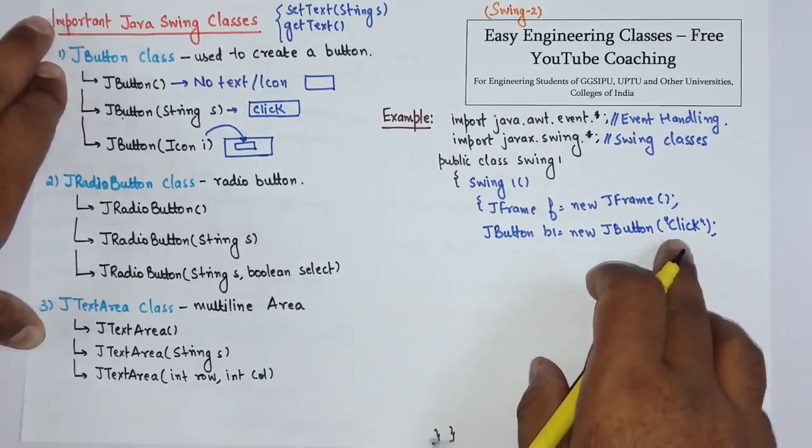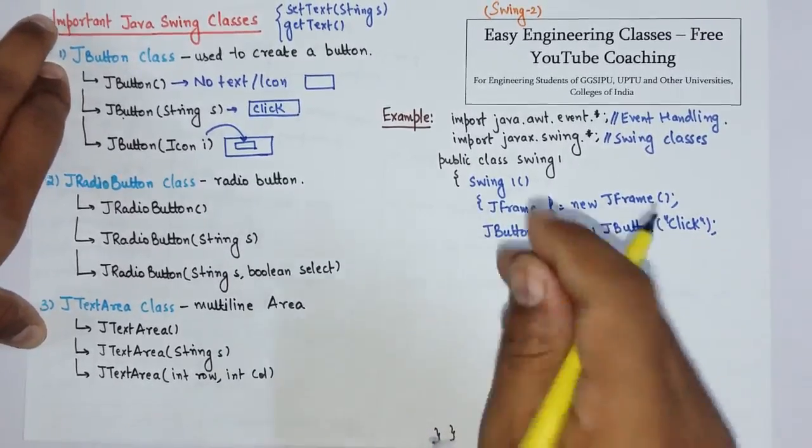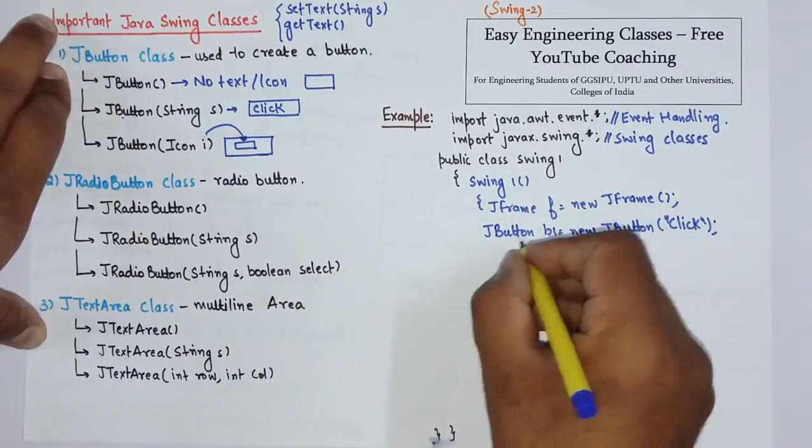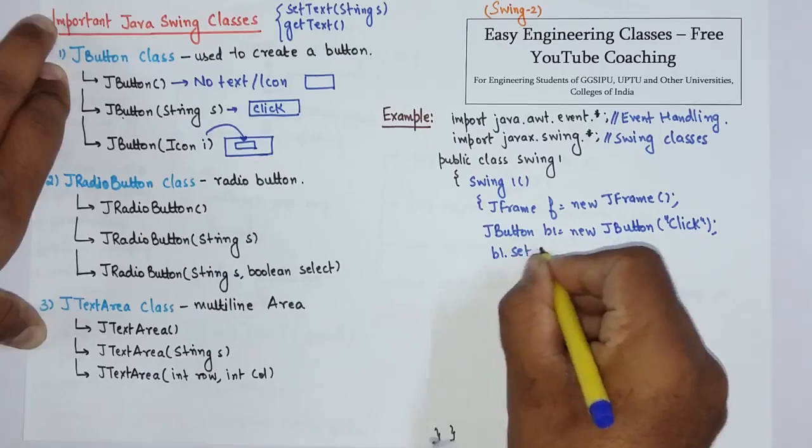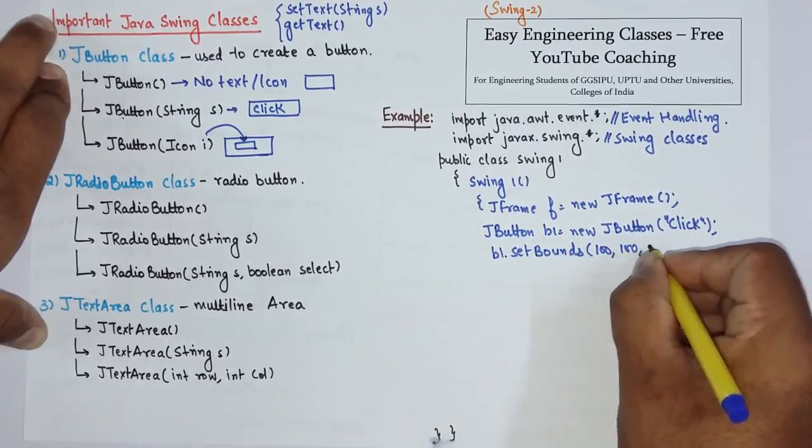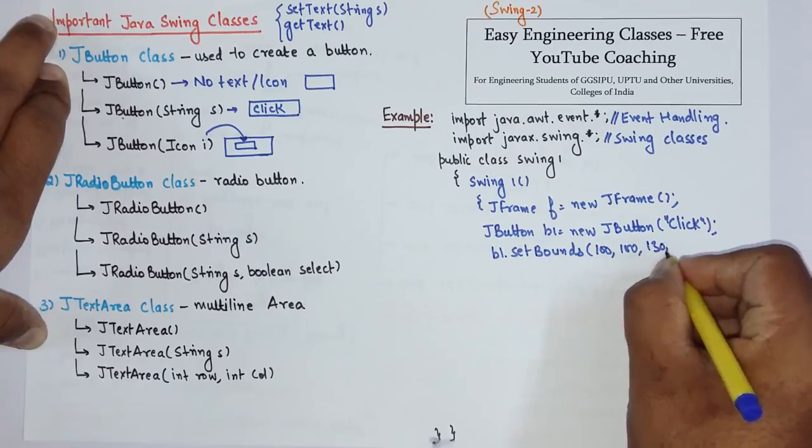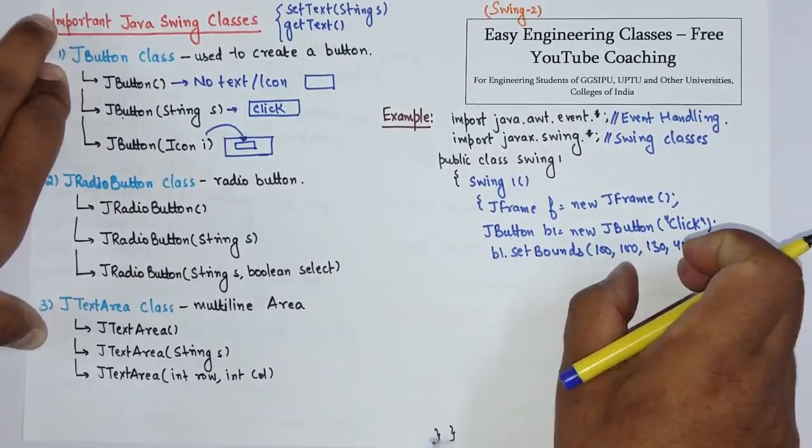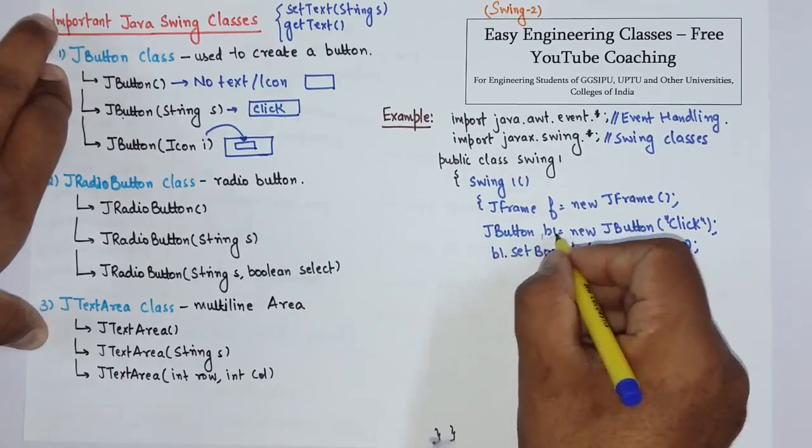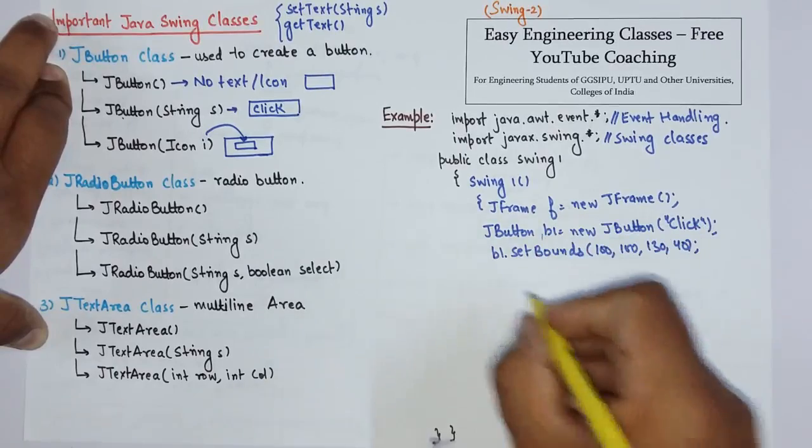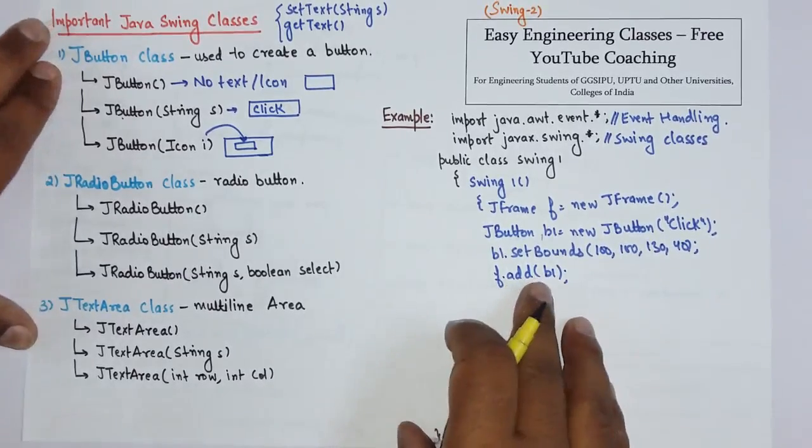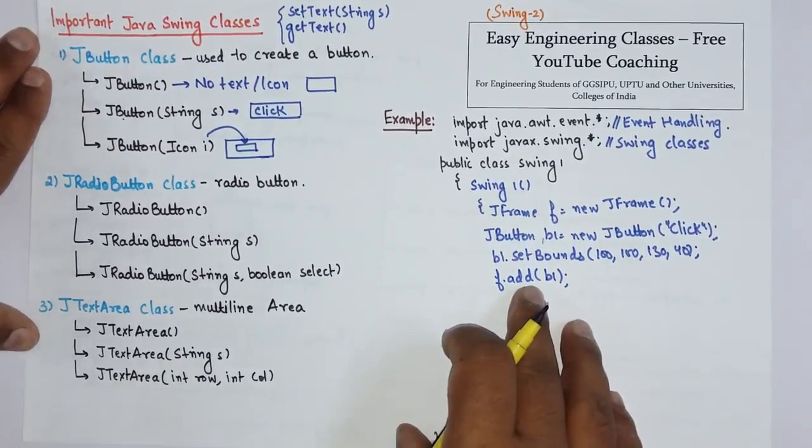I have created a button with the text set 'Click'. Then to specify the position of the button you have to use setBounds function, so b1.setBounds. Then give the specified coordinates, suppose 100, 100, 130, 40. These coordinates are to be specified as per your requirement. Now I have to add this component b1 into container frame f, so use f.add b1. So this is how you can add a button to the Java Swings frame.